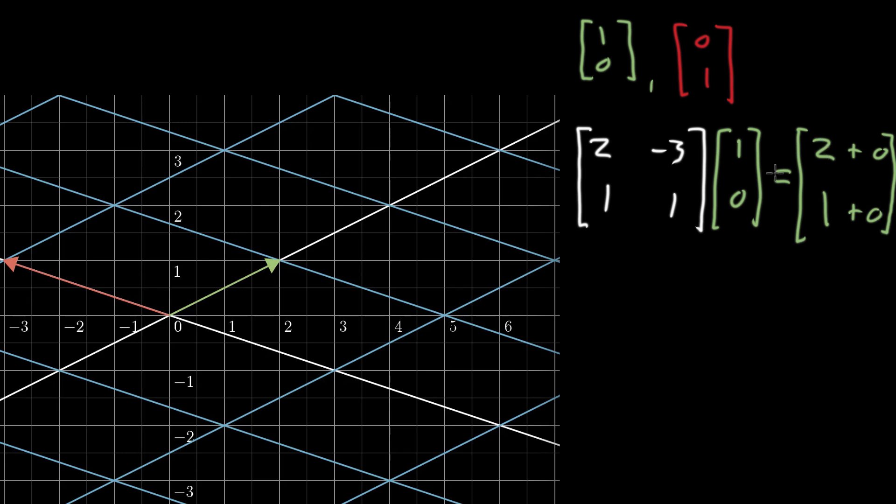Similarly, if we take that same matrix [2, 1; -3, 1] and we multiply it by (0, 1)—the second basis vector—what you're going to get is 2 times 0, so 0 plus that element in that second column, and then 1 times 0, so another 0, plus 1 times 1, plus that 1. So again, it's like that 0 knocks out all of the terms in other columns.